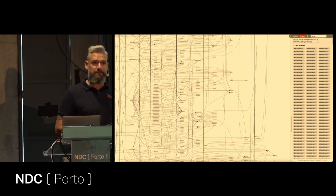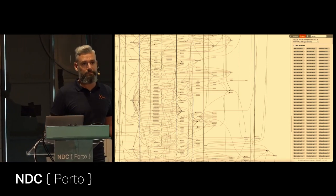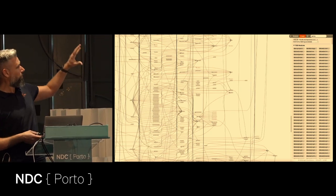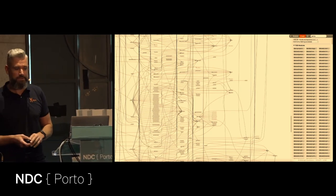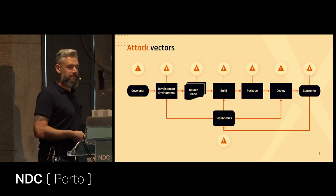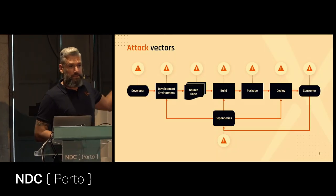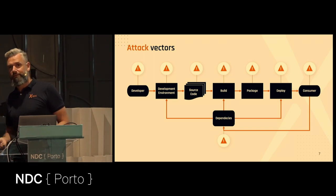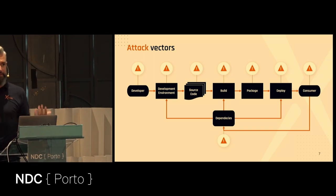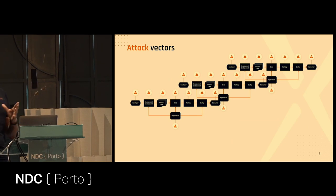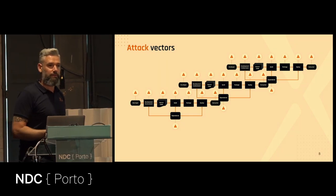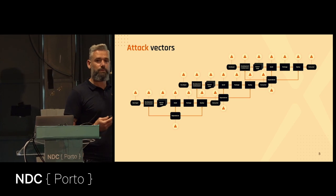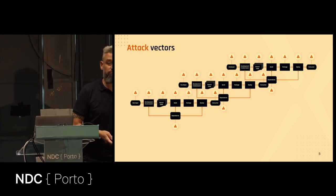All these dependencies have more dependencies, and they have more dependencies, and they have more dependencies. This is just a small part of all the dependencies in Gatsby. And of course all of these dependencies have the same attack vectors — they all have build environments, they all have developers, they all have build systems. So this is like a recursion, and a lot of attack surface that attackers can use to really get into your application.